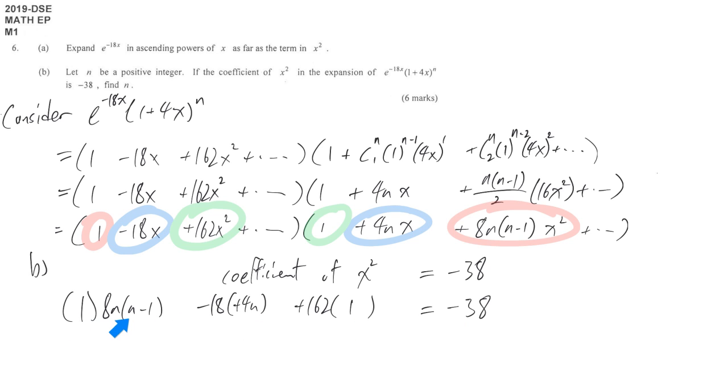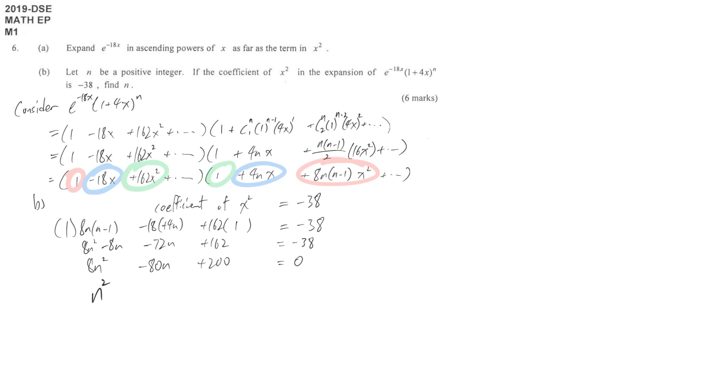Both sides divided by 8. So we have (n-5)^2 equal to 0. So n is equal to 5, which is our repeated root.